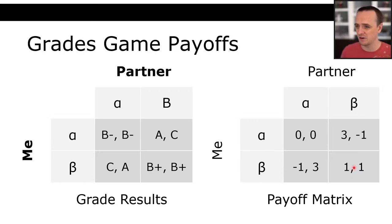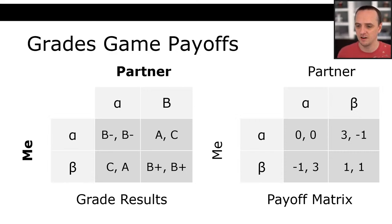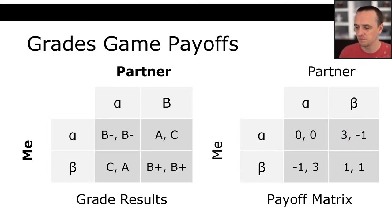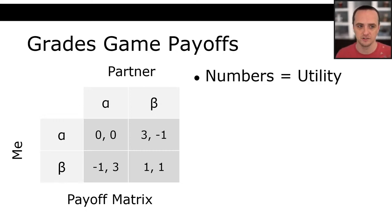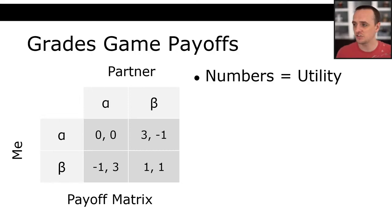This concept is called strategy domination. We say strategy alpha strictly dominates strategy beta if my payoff from alpha is strictly greater than that of beta no matter what the other players do. In this case, no matter whether the other player chose alpha or beta, alpha was always my best choice — so alpha strictly dominates beta. Do not play a strictly dominated strategy. If this were on an exam, choosing beta would be wrong.